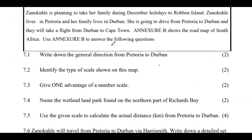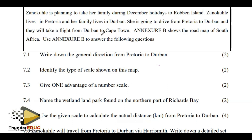Question number 7. Zanokulhle is planning to take the family during December holidays to Robben Island. Zanokulhle lives in Pretoria and her family lives in Deben. She's going to drive from Pretoria to Deben and they will have to take a flight from Deben to Cape Town. The next chart B shows the road map of South Africa. We're going to use the next chart to answer the question.